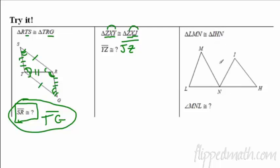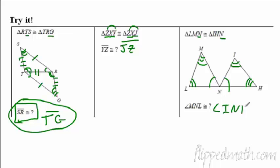Sometimes triangles share a common point. I'm looking for angle MNL — who does it match? Let me mark it. L matches I, M matches H, and N matches N — it's the same angle on both sides. So you could name it INH or HNI, it doesn't really matter. Good work on this — good luck on the practice and the mastery check. I hope it goes well.